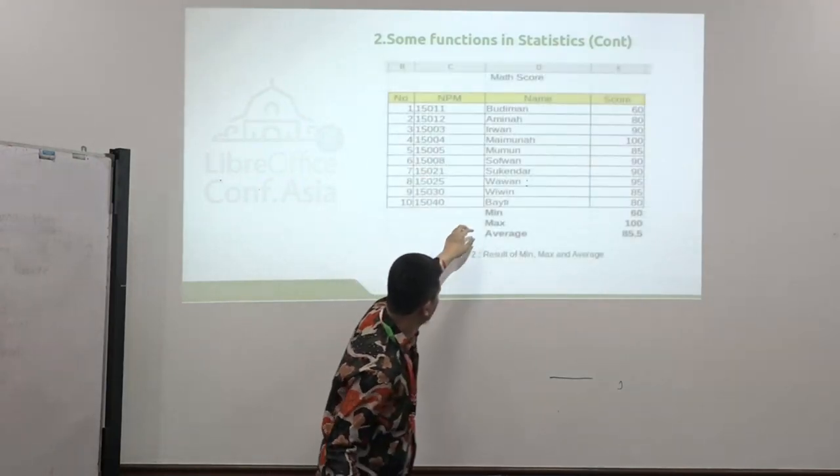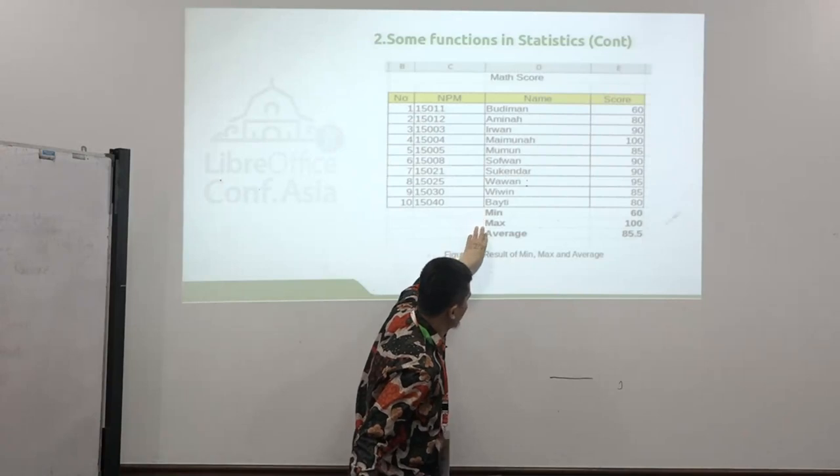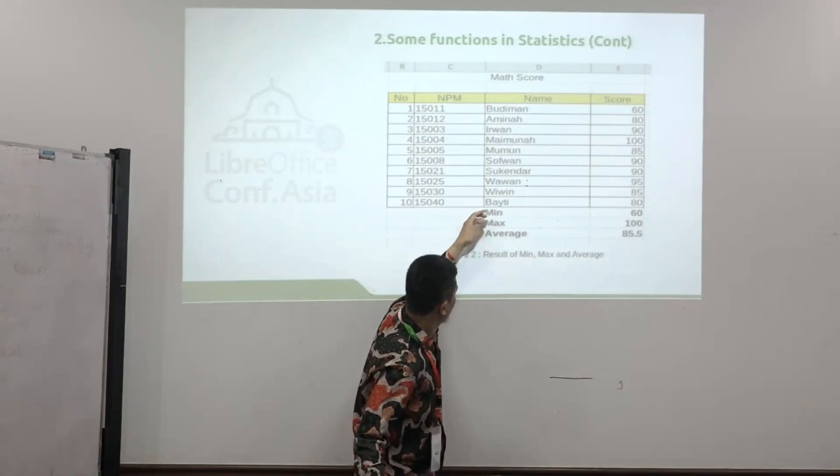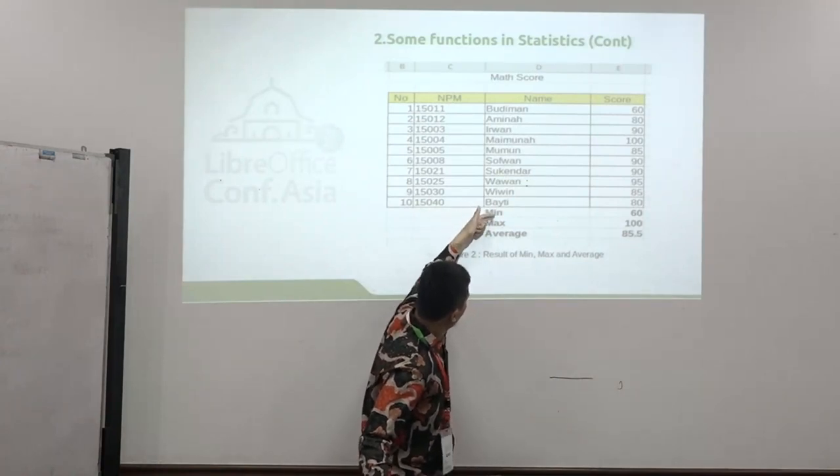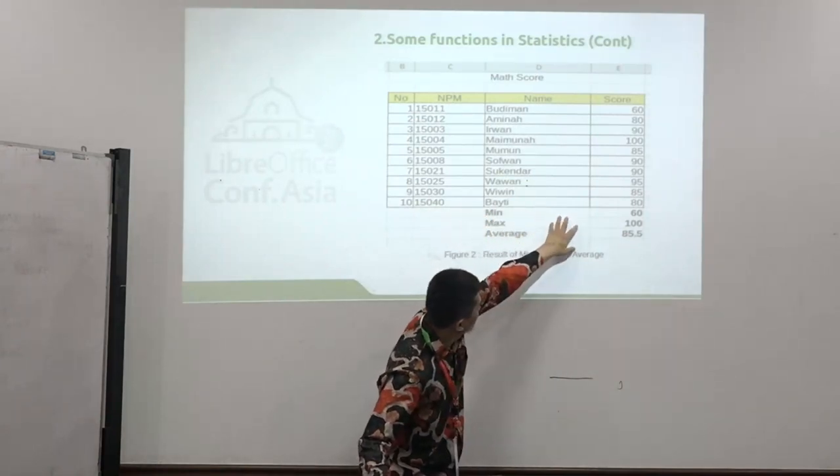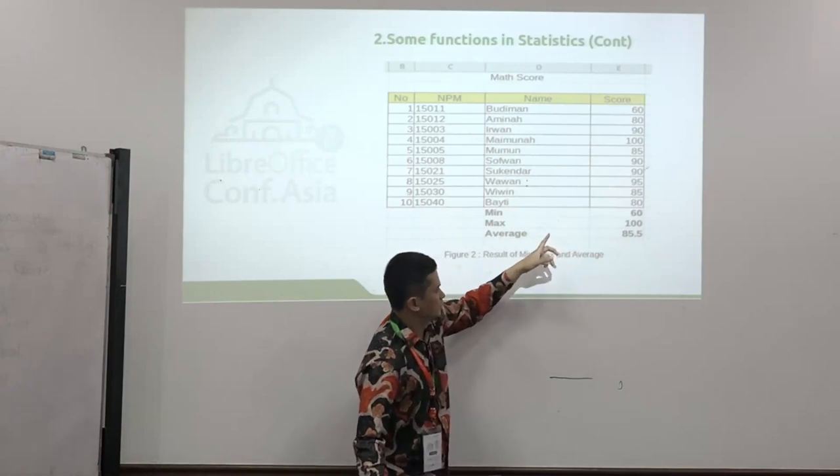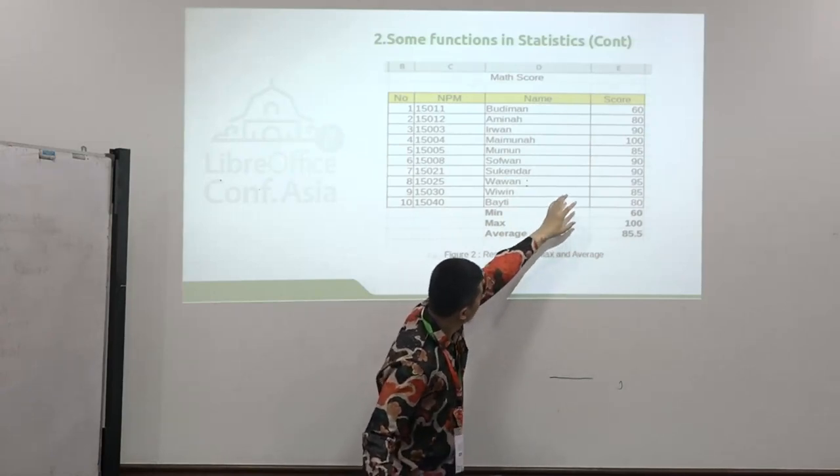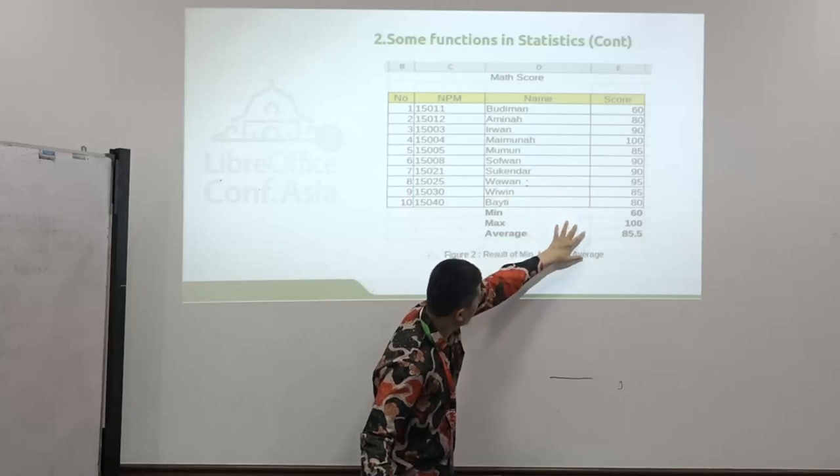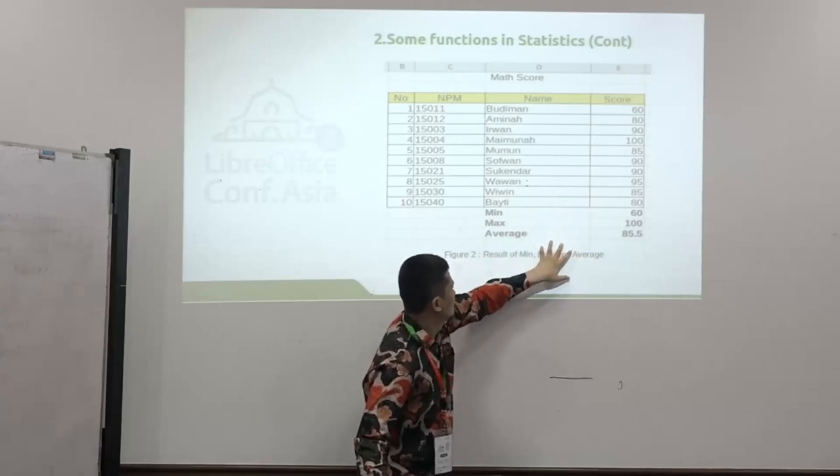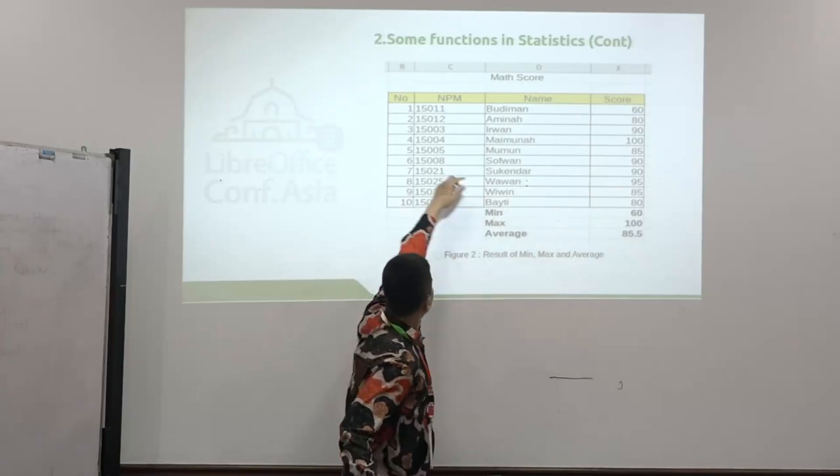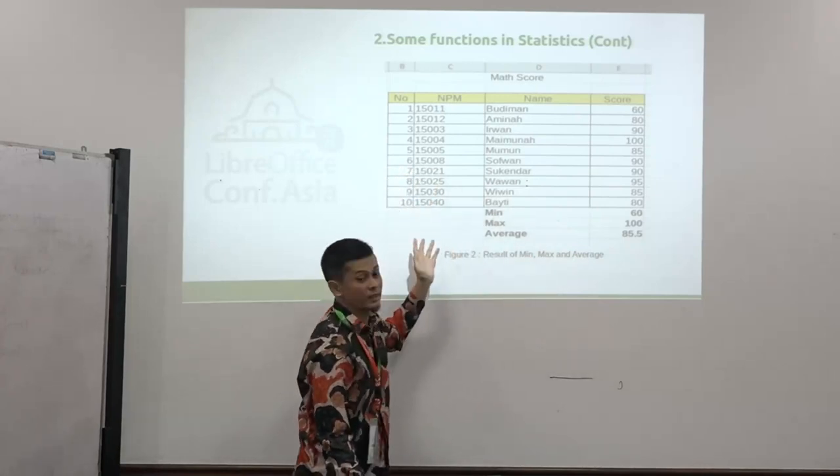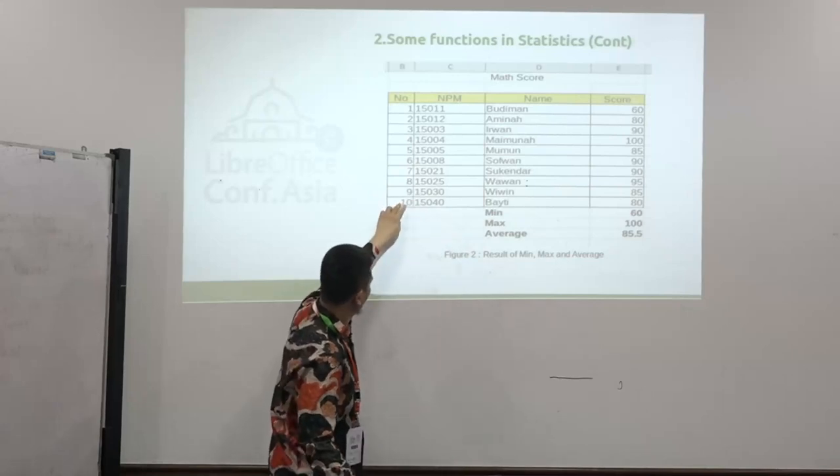And then, this is the data. And then, this is the minimum, maximum, average. It is easy to decide the minimum. We just choose the at least of number that in the serial data, 60 is the minimum and maximum is 100. And the mean is the summation of 10 records divided with 10. The 10 is the number of the data.